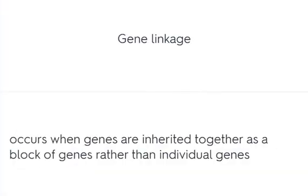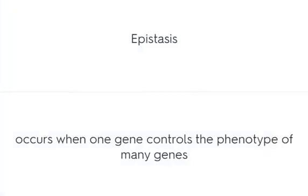Gene linkage occurs when genes are inherited together as a block of genes rather than individual genes. Epistasis occurs when one gene controls the phenotype of many genes.